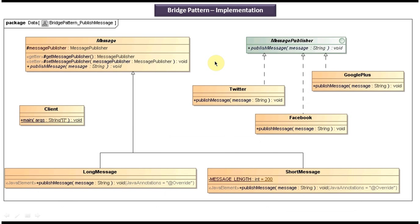This is the class diagram of the scenario we just discussed. Here you can see a MessagePublisher interface which has an abstract method publishMessage that accepts a string parameter called message. This interface is implemented by three concrete classes: Twitter, Facebook, and Google Plus. All three provide an implementation of publishMessage. Using Twitter you can publish short messages, and using Facebook and Google Plus you can publish long messages.